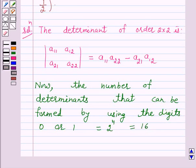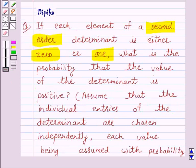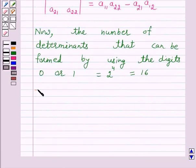16. Now we have to find what is the probability that the value of the determinant is positive.